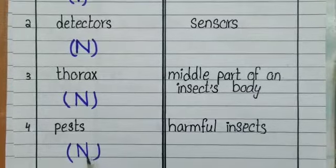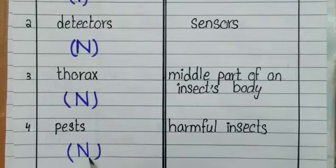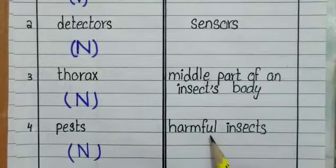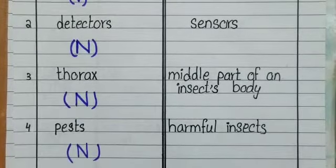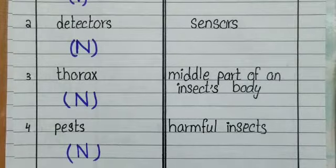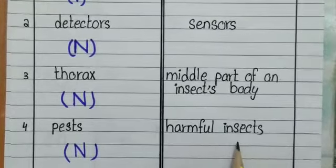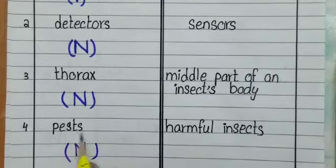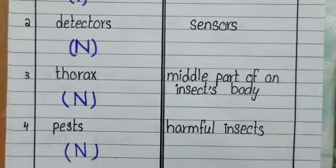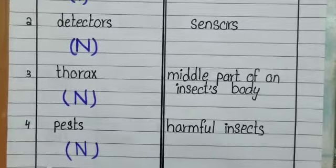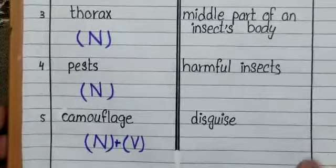Now move to the next word: 'pests' — P-E-S-T-S. Pests, according to grammar, is also a noun. Its meaning is harmful insects. You can also say it means troublemaker, because different kinds of insects destroy crops. So pest means harmful insects.